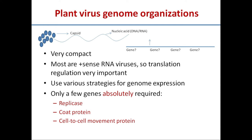Only a few genes are absolutely required by plant viruses: the replicase gene for replication of the genome, the coat protein or capsid gene, and the cell-to-cell movement protein gene. These three genes are absolutely required for all viruses. Other genes also exist — such as genes related to vector transmission and suppression of plant defense — but those are not absolutely required.